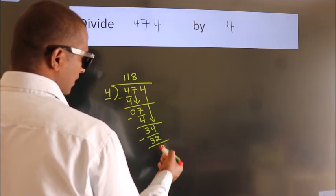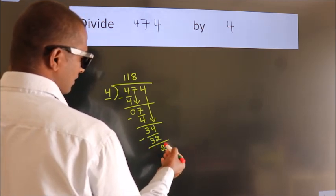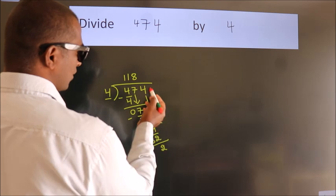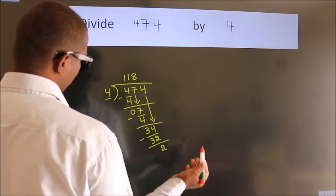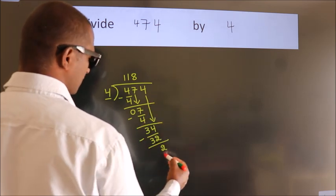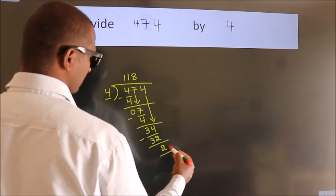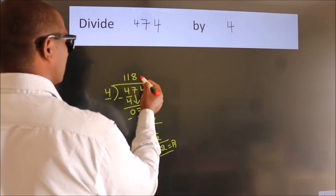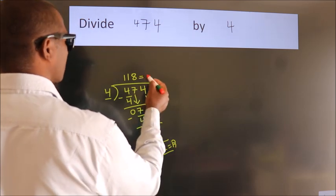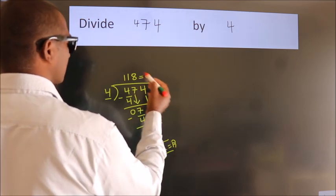After this, there are no more numbers to bring down, so we stop here. 2 is our remainder, and 118 is our quotient.